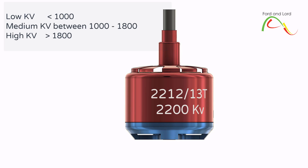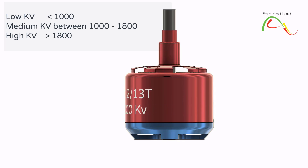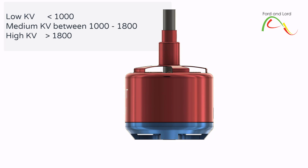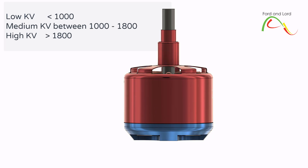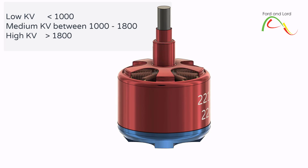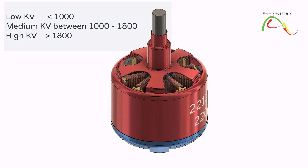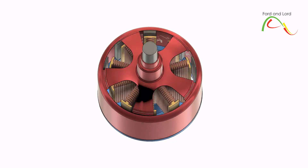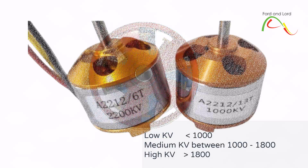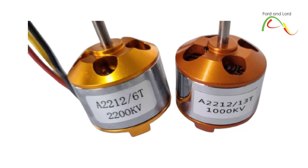Motor KV ratings below 1,000 KV are considered low KV for most multi-rotor drones. Motor KV ratings between 1,000 KV and 1,800 KV are considered medium KV motors — these are versatile and can be used in a broader range of drone sizes and applications, striking a balance between torque and speed. Motor KV ratings above 1,800 KV are considered high KV motors, commonly used in smaller racing drones, freestyle drones, and other applications where agility, responsiveness, and high RPMs are prioritized over torque.